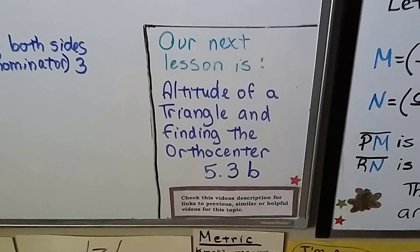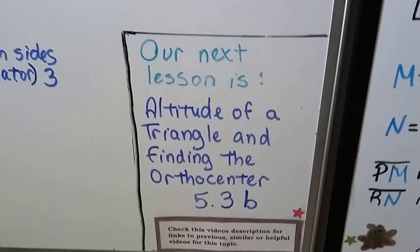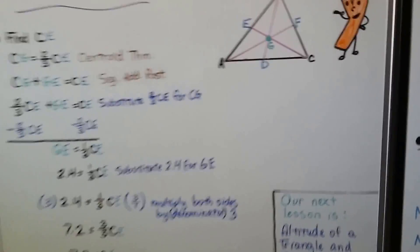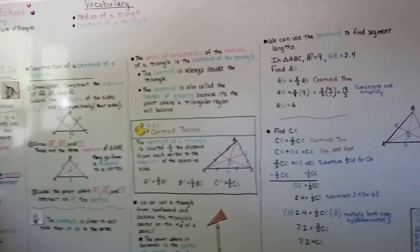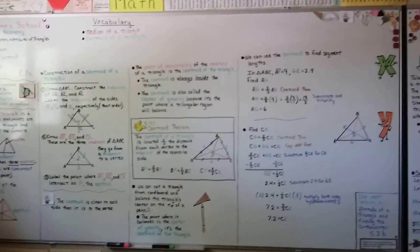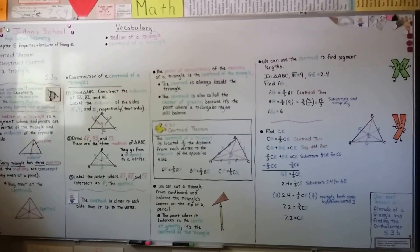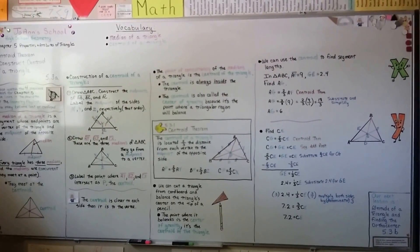Our next lesson is altitude of a triangle and finding the orthocenter. It's going to be 5.3b. So if you want to have some fun, cut out a piece of cardboard. Remember, paper's too flimsy. And try balancing it on pencil, seeing if you can find that sweet spot, that center of gravity, that centroid. I hope you have a great day. I'll see you next time. Hit that like button for me. Bye!